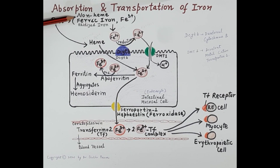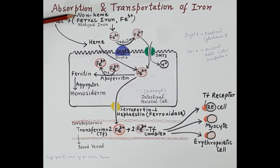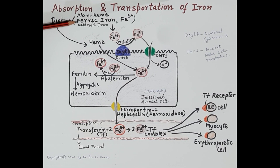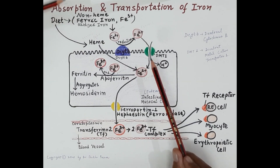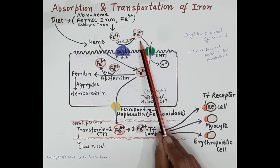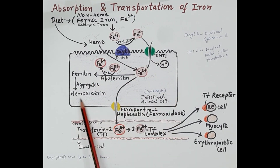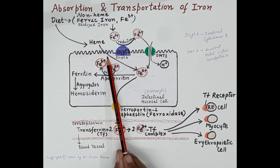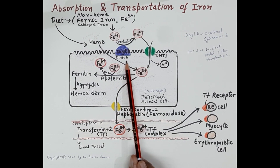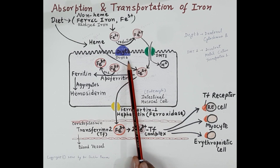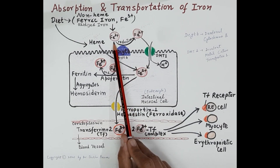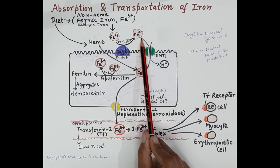In non-heme iron, iron is present in the ferric form — Fe3+. Ferric iron cannot be absorbed directly in the intestinal mucosa and must first be reduced to the ferrous form. On the apical surface of the enterocyte are enzymes called duodenal cytochrome B enzymes. These enzymes reduce the ferric iron form to the ferrous iron form — Fe2+.